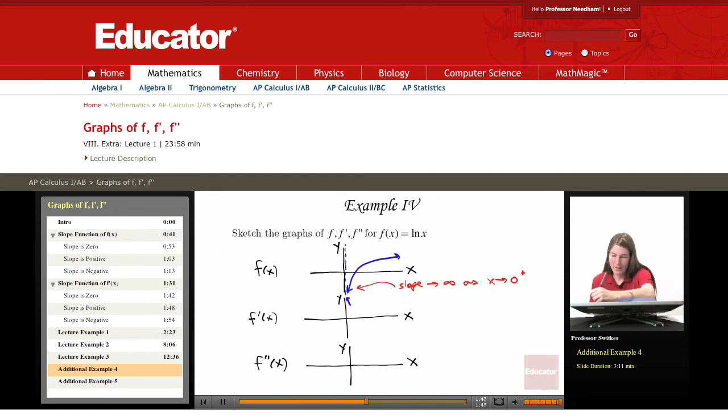Now f has slope heading towards zero as x heads towards infinity. So f' has value heading towards zero as x heads towards infinity. And we get this sort of graph and then you'll notice that this looks like one over x. And of course,